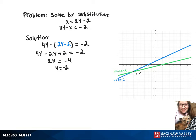So now we can take that value and substitute it into our first equation, which gives us x equals 2 times negative 2 minus 2, and x equals negative 6.